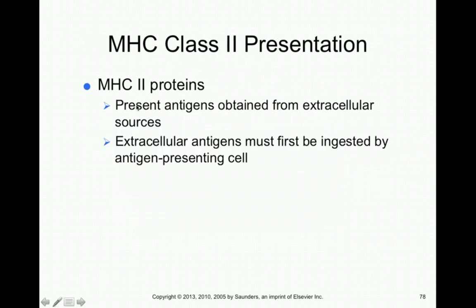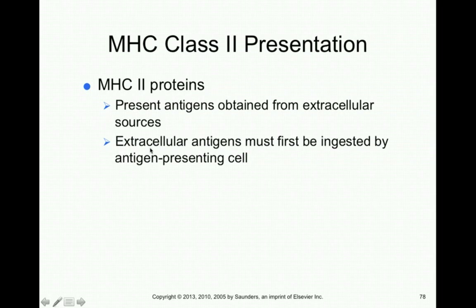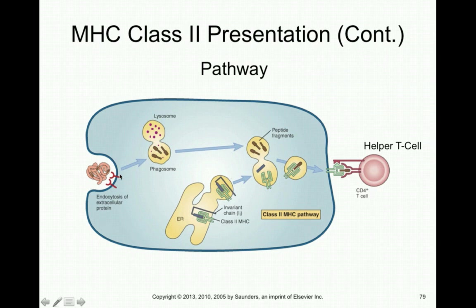MHC class 2 proteins present antigens obtained from extracellular sources, differing from class 1 which obtains proteins from within cells. Class 2 is associated with phagocytic cells like neutrophils and macrophages. These extracellular antigens must first be ingested by antigen-presenting cells like macrophages through phagocytosis. The macrophage phagocytoses the extracellular debris, fuses it with a lysosome, chops it into peptide fragments, fuses those fragments with a class 2 MHC receptor, and expresses that on the cell surface — presenting antigens to other immune cells.